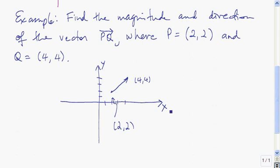Here we have our vector drawn in the XY plane. The magnitude of the vector is the length of this segment. The easiest way to find that is to form a right triangle whose hypotenuse is that segment. Since the tail has x-coordinate 2 and the head has x-coordinate 4, the horizontal side has length 2. Similarly, the y-coordinates are 2 and 4, so the vertical side also has length 2.